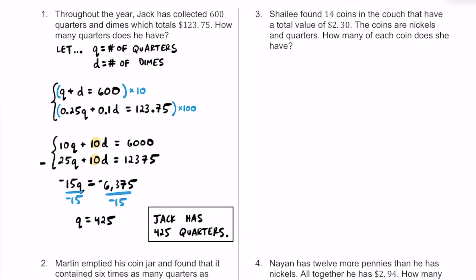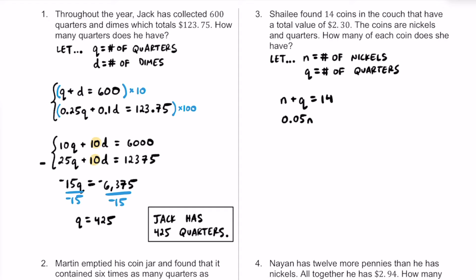Let's try another one. In number three, Shaylee found 14 coins that have a total value of $2.30. The coins are nickels and quarters. Let N represent the number of nickels and Q the number of quarters. She has 14 total coins, so N plus Q equals 14. Nickels are worth 5 cents each, so 0.05N, plus quarters at 0.25Q, equals $2.30.